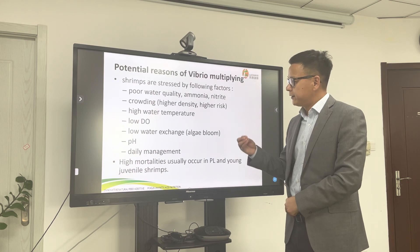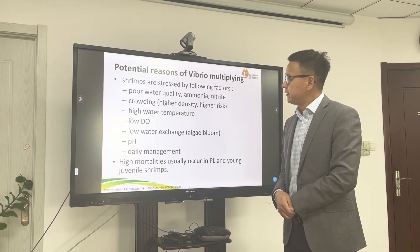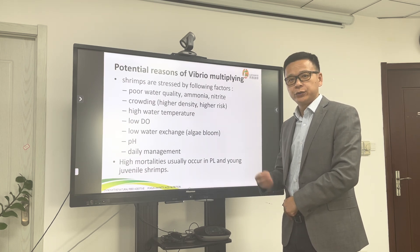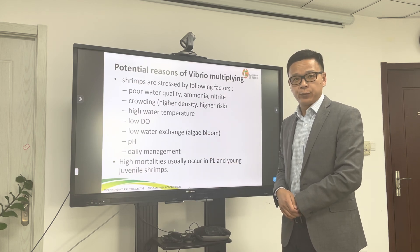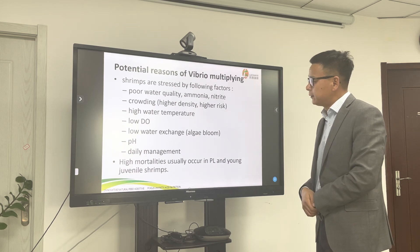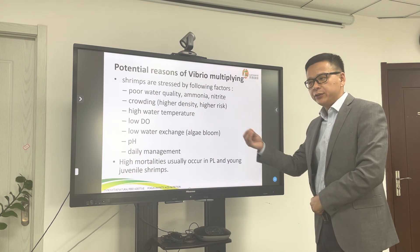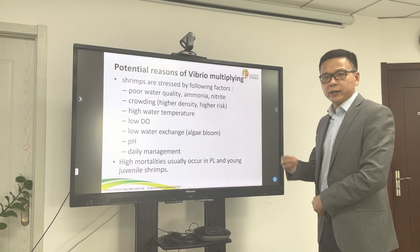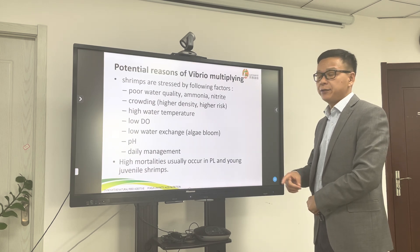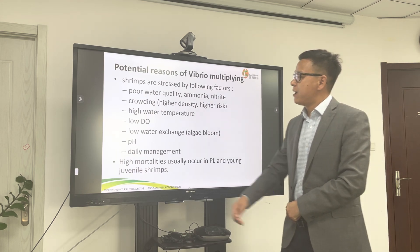Also critical is dissolved oxygen. Always keep dissolved oxygen above 5 milligrams per liter. If less than 3, or less than 2, your shrimp will get problems easily. Another factor, especially during the late part of culture, is low water exchange. When the loading rate is high and nutrients accumulate, if there's no water change, algae bloom will come in. Once algae bloom, your pH will fluctuate a lot in a day — sometimes as high as 9.2.